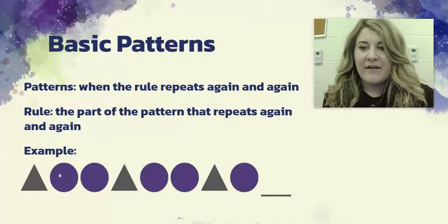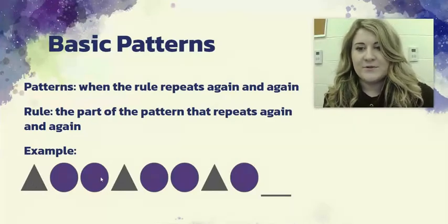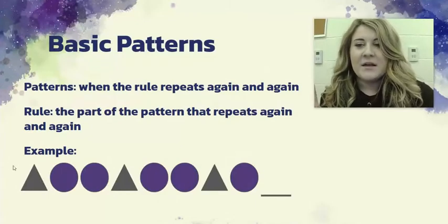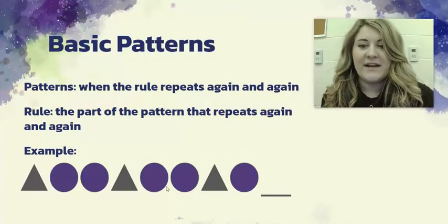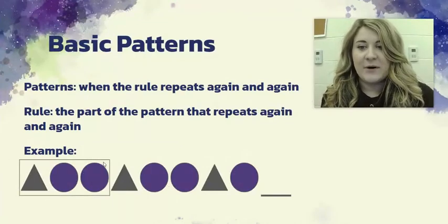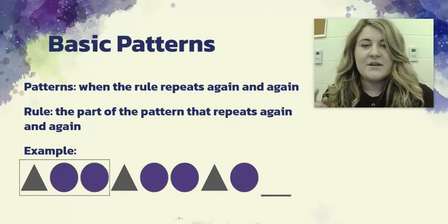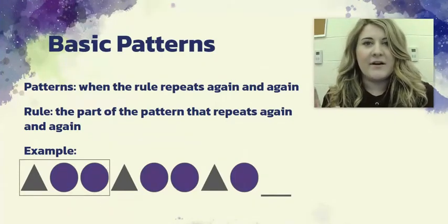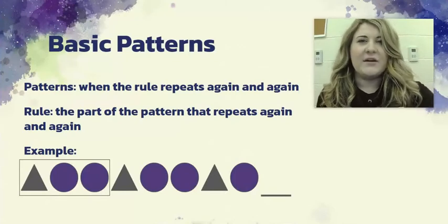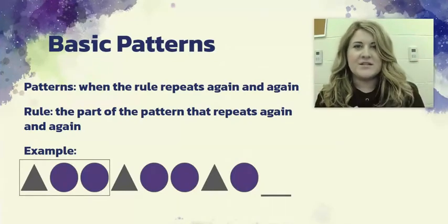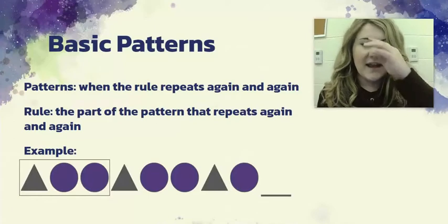Here we have: gray triangle, purple circle, purple circle, gray triangle, purple circle, purple circle. You can see the pattern starts repeating itself right here, so we know the rule is this part in the box. Whenever you're doing a pattern with shapes and colors, I always like to box in the rule so I know what's coming next.